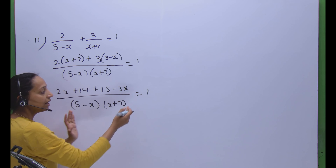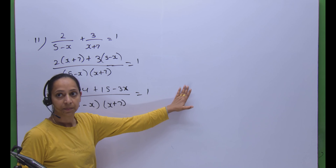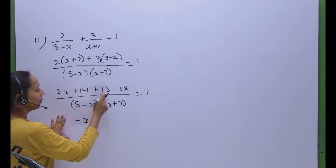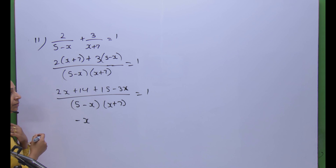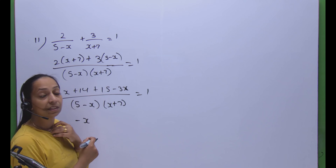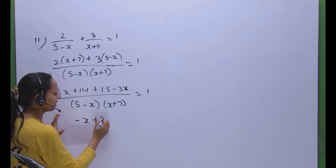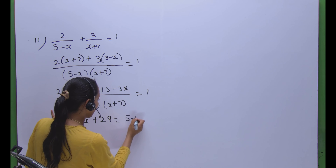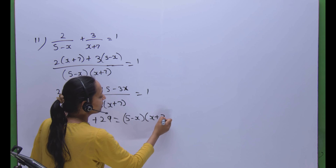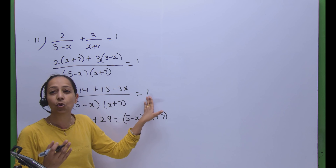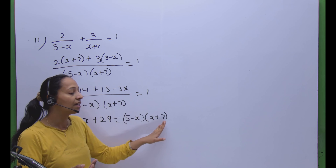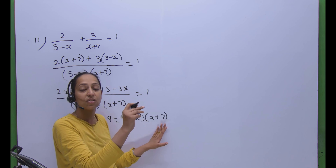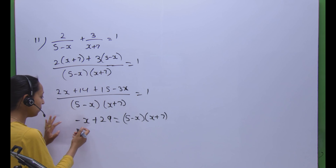We can take the whole bracket to this side and open it. So 2x minus 3x gives minus x, and 15 plus 14 gives 29, so we have minus x plus 29. We can take the whole bracket to that side. Since it is multiplied by 1, there is no need to show the multiplication — we can write it as it is.